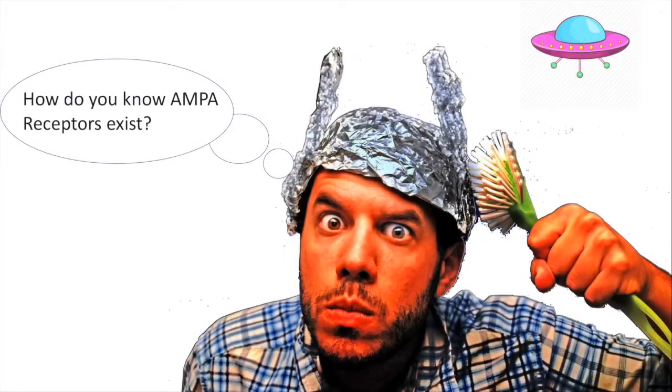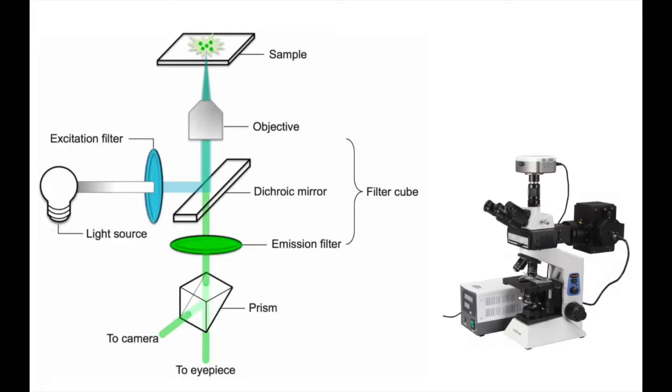But how do you know these AMPA receptors actually exist? Using fluorescent microscopy, scientists are able to observe the insertion of AMPA receptors into the membrane of rat hippocampal neurons.